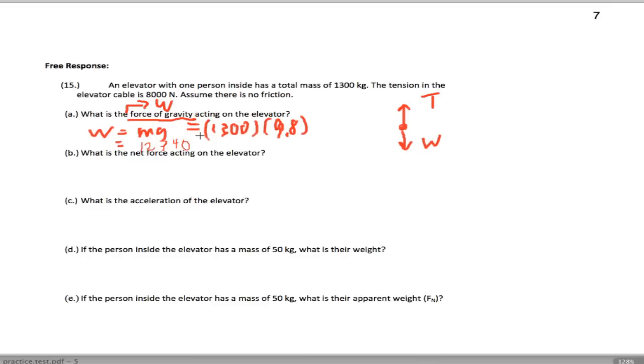Now we want to get the net force acting on the elevator. In the y direction, we have sum of the forces equals mass times acceleration. We want the net force, which is the tension minus the weight. So 8,000 newtons minus 12,740 gives us negative 4,740 newtons.